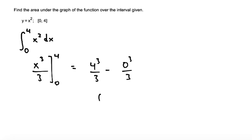4 cubed is 64 over 3, and 0 cubed just goes to 0. There we have it: 64 over 3 is the area under the graph of the function.